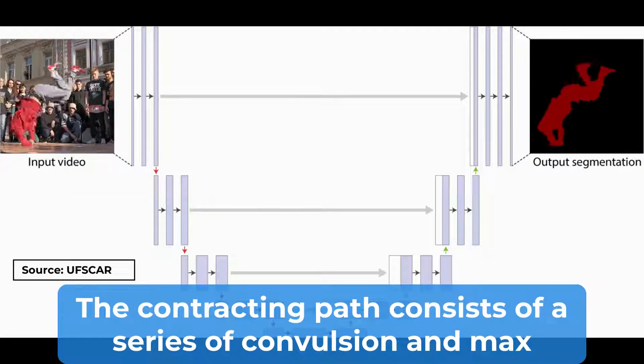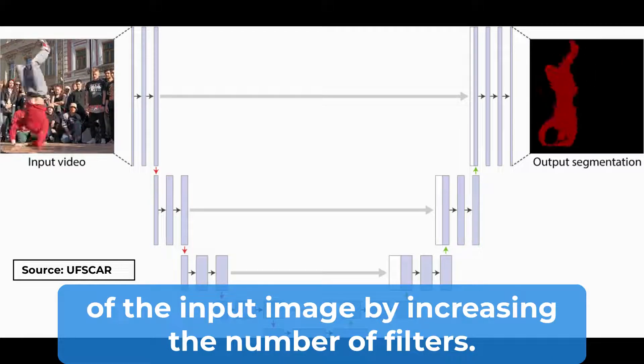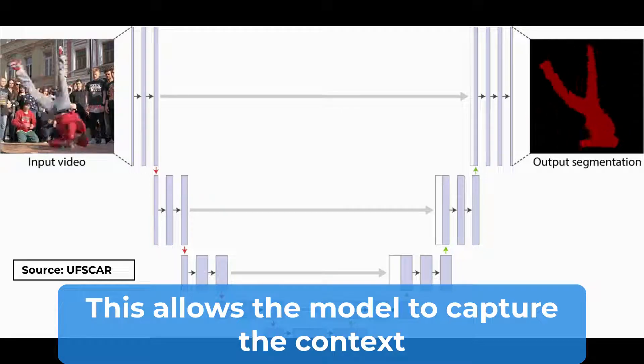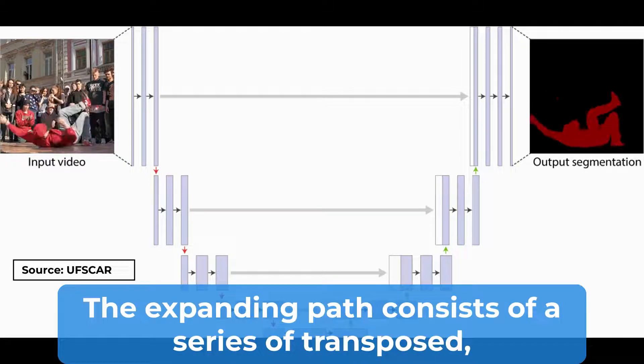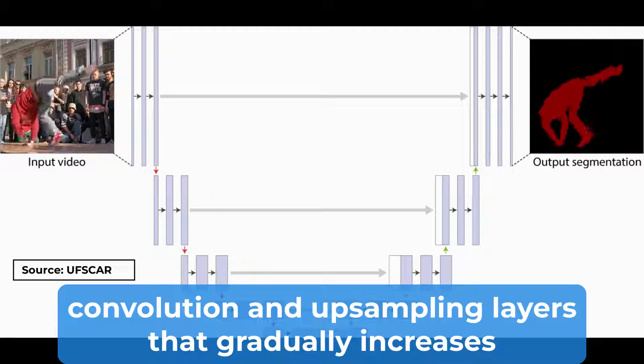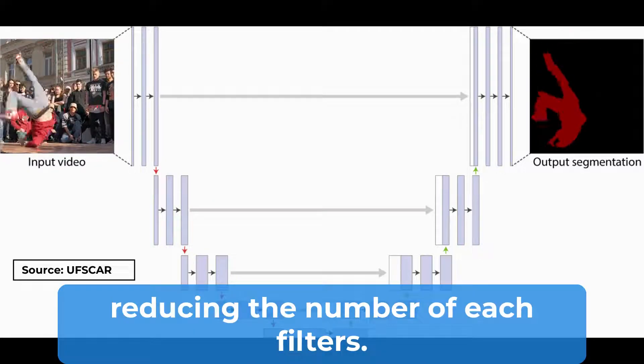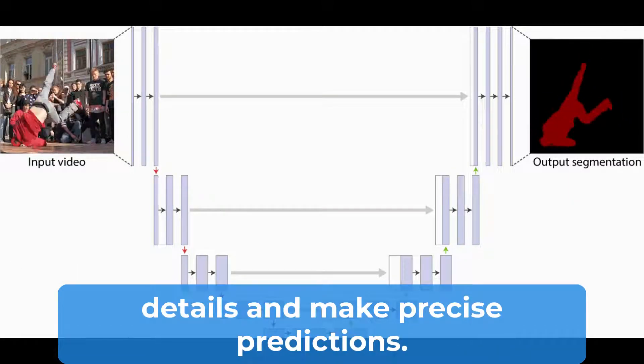The contracting path consists of a series of convolution and max pooling layers that gradually reduce the spatial dimension of the input image by increasing the number of filters. This allows the model to capture the context of the image and extract high-level features. The expanding path consists of a series of transposed convolution and upsampling layers that gradually increase the spatial dimension of the features by reducing the number of filters. This allows the model to incorporate fine details and make precise predictions.